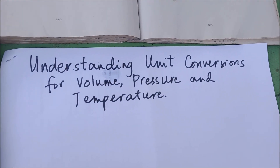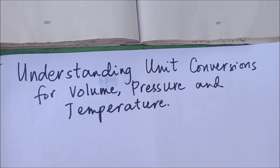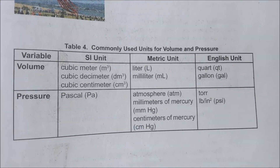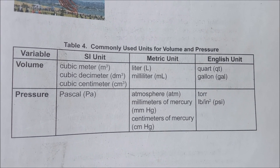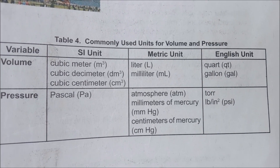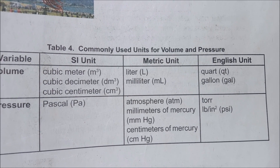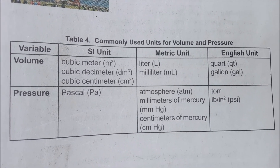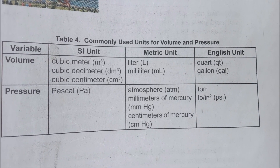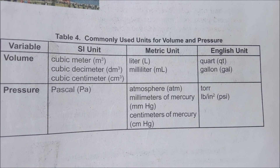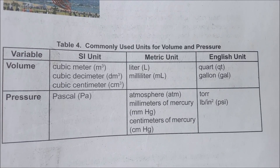We're going to understand how to do unit conversions for volume, pressure, and temperature. In your book you are given a table for commonly used units. For volume, international standard units are cubic meters, cubic decimeters, and cubic centimeters. In metric units you have liter and milliliter, and in English units you have quarts and gallons. For pressure, the SI unit is Pascal, in metric units we have atmosphere and millimeters of mercury (mmHg) and centimeters of mercury (cmHg), while for English units we have pounds per square inch.